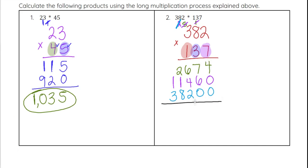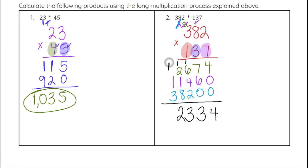Finally, we add down the columns. 4 plus 0 plus 0 is 4. 7 plus 6 is 13 — carry the 1. 6 plus 4 plus 2 plus 1: thinking 6 plus 4 is 10, plus 2 plus 1 is 13 — put 3, carry 1. 1 plus 2 plus 1 plus 8: 8 plus 2 is 10, plus two 1s is 12 — put 2, carry 1. Then 1 plus 1 plus 3 is 5. Our answer is 52,334.